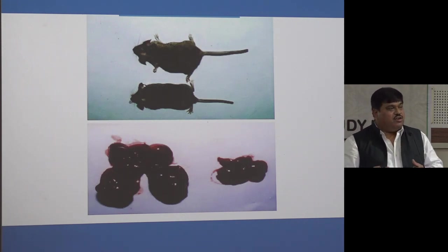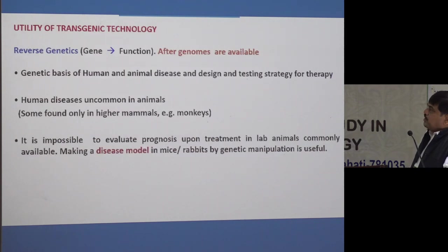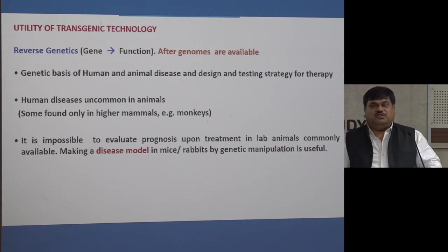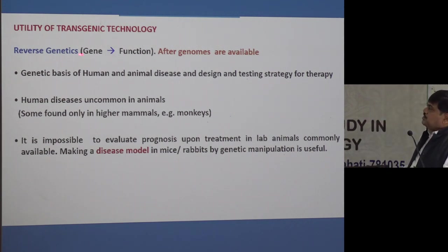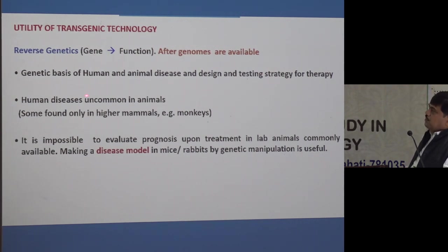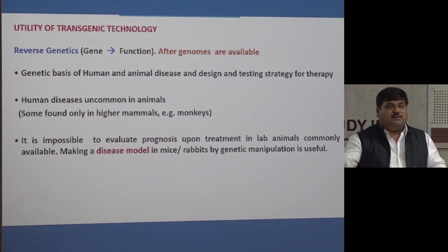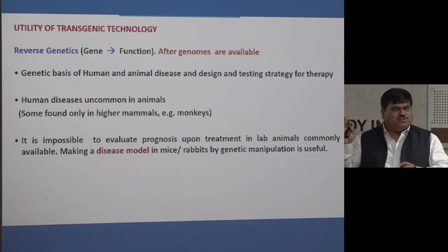With this model you can inject drugs and test which ones prevent or reduce liver growth. Human beings cannot be experimented upon — that is why you need transgenic animals. This is called reverse genetics: we know about genes but not their functions, so this is the way to discover them. It also enables the genetic basis of human and animal diseases to be understood and therapies designed.